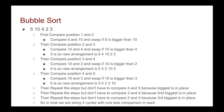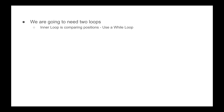So this is our algorithm — but how do we translate this into code? We're going to need two loops. We need an inner loop, which is going to be doing the comparing of positions, and we can use a while loop for this. Then there's our outer loop, which is going to be repeating the steps, and we can use a for loop.